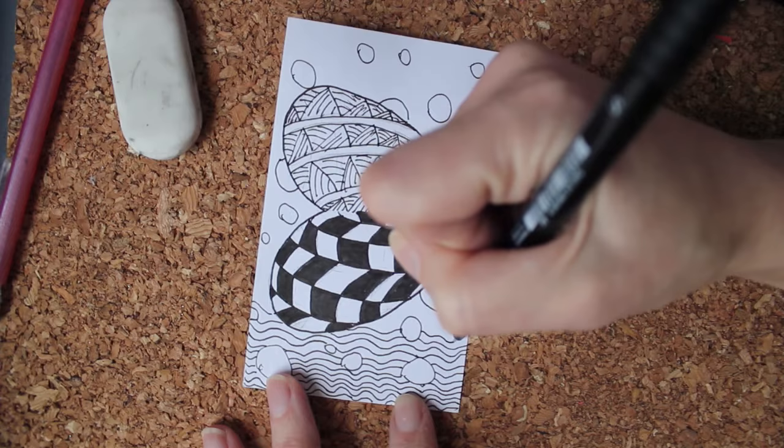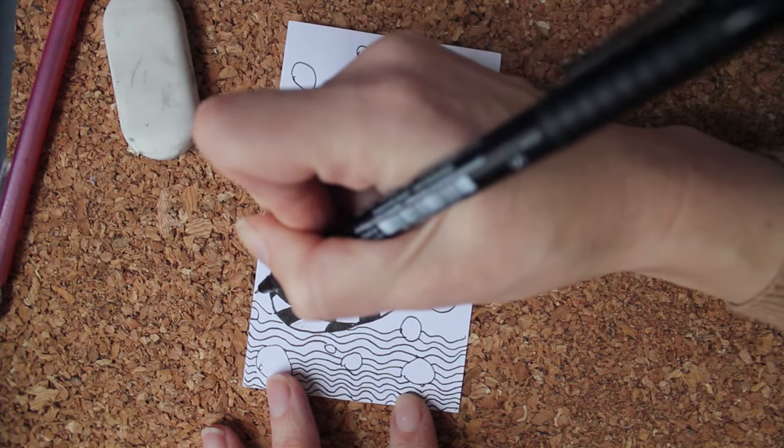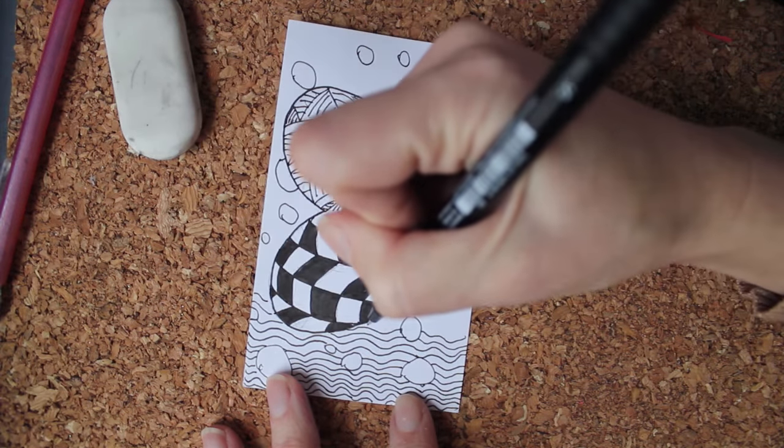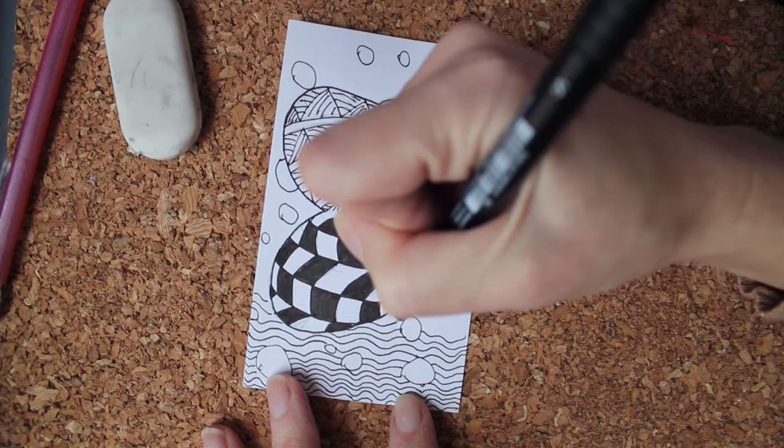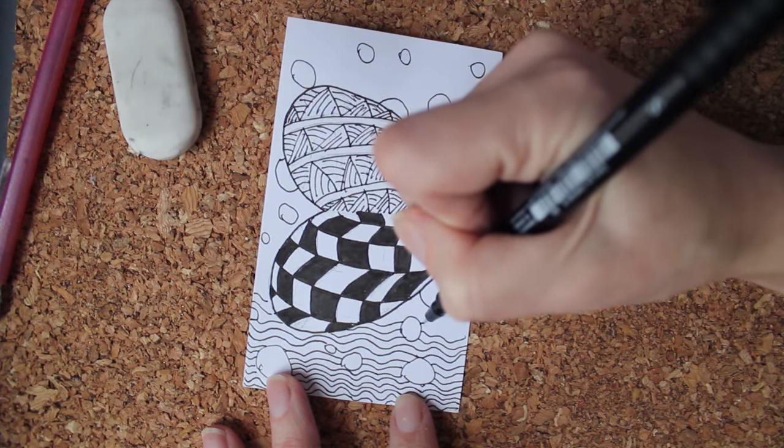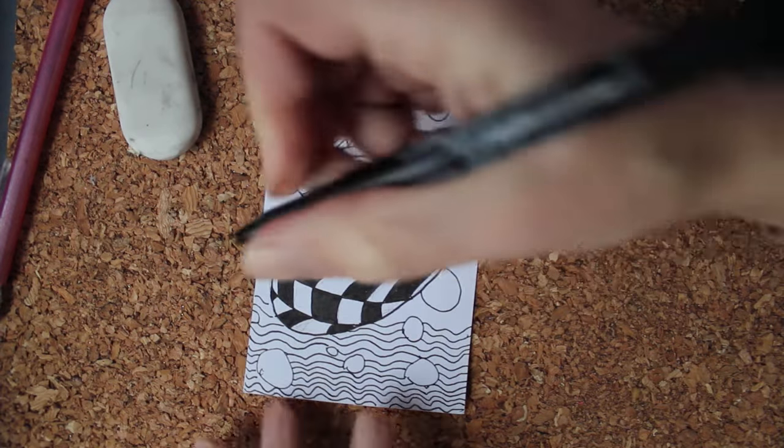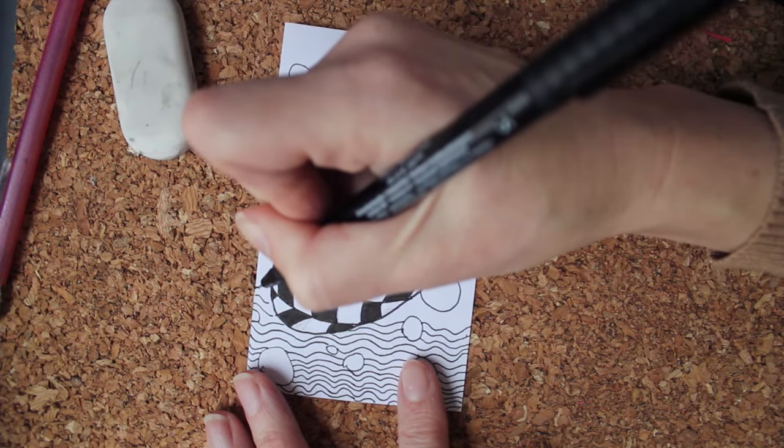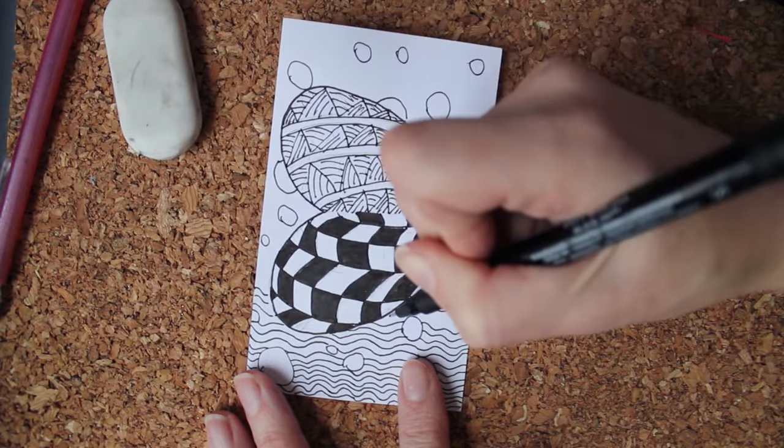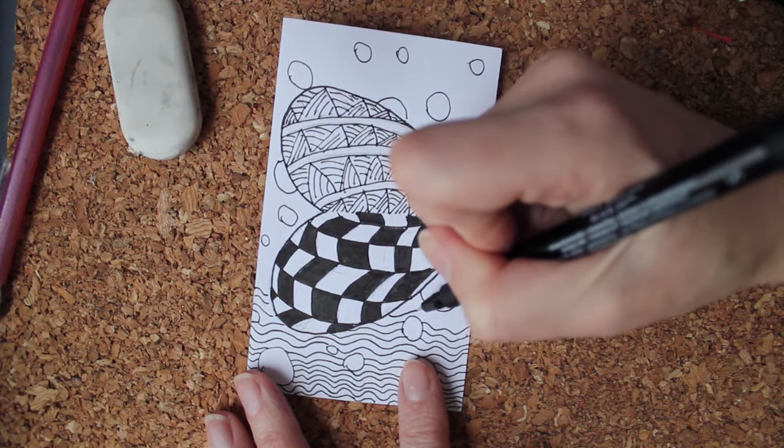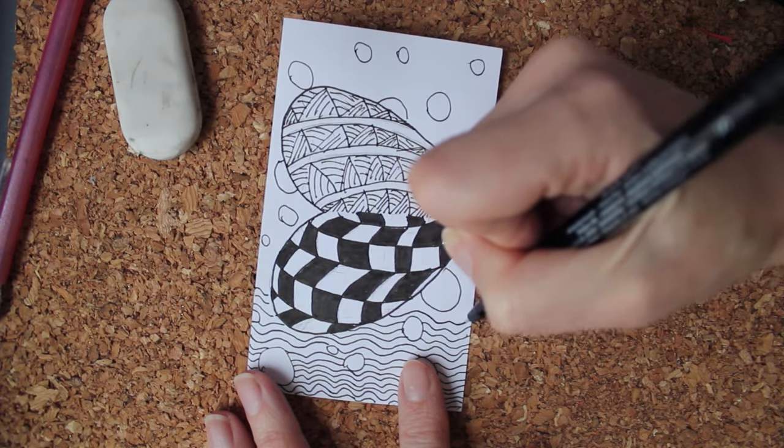This has a groovy look, I think. I'm wondering if I should color it in a little bit. In Zentangle, a lot of them are black and white, but I like a splash of color. I think it looks nice. The black and white is okay, but a splash of color gives it character sometimes.